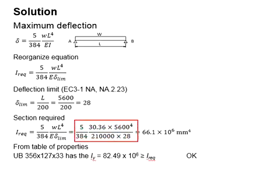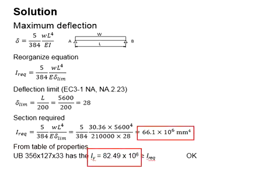Substitute the value into the equation. The second moment of inertia required is 66.1 multiplied by 10 to the power of 6. Search through the table of properties. Find a section with the second moment of inertia greater than this value.